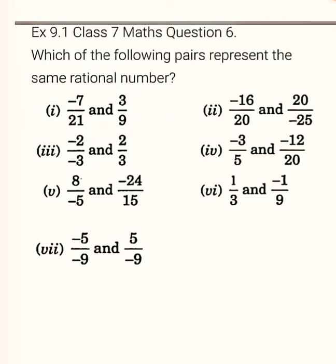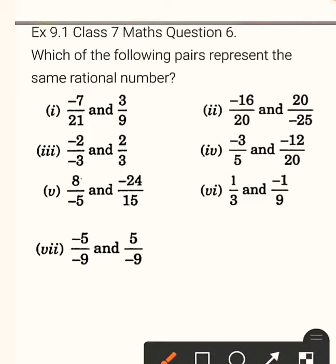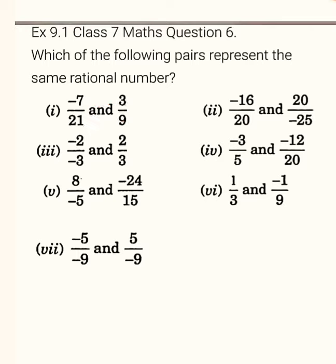Let us see the solution part. You can find out by cross multiplication — multiply 21 into 3 and 9 into 7. This is a shortcut method, or you can take LCM and make the denominators the same. Either method works fine. You can apply any method.